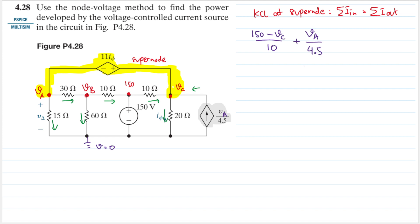The currents going out: this one gives Va divided by 15, and this one gives Vc divided by 20.